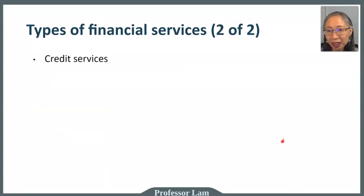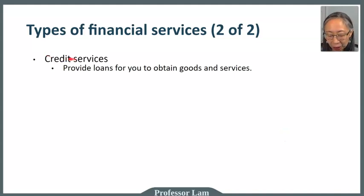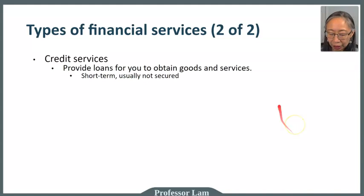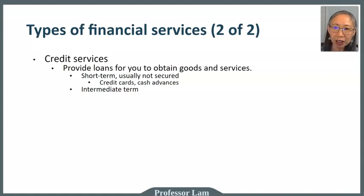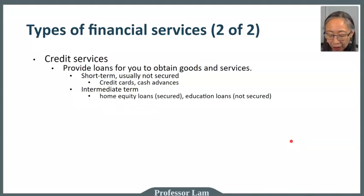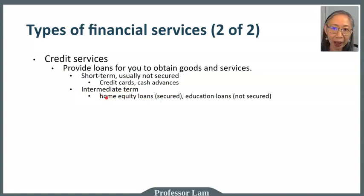Another very important service is credit services. In banking, the term credit refers to loans — when you need to make purchases but don't have the money yet. For short term, we're talking about credit cards, which are unsecured, meaning if you don't pay, the credit card company can only come after you personally. In the intermediate term — loans of less than five to ten years — examples include home equity loans, which are typically secured, meaning your house is used as security. If you don't make your home equity loan payment, the bank can take your house and sell it to pay off the loan.